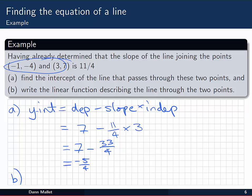Part B just says write the linear function describing the line. So now we have the gradient, or the slope, and the y-intercept value. So we can use y equal to mx plus c, which in this case is going to be y equal to 11 on 4 x minus 5 on 4, our new y-intercept value. So that's our linear function.